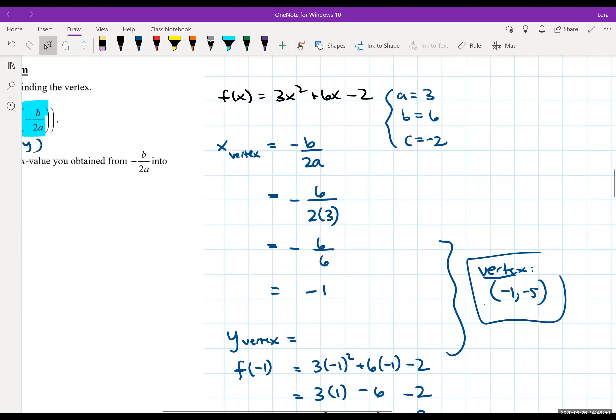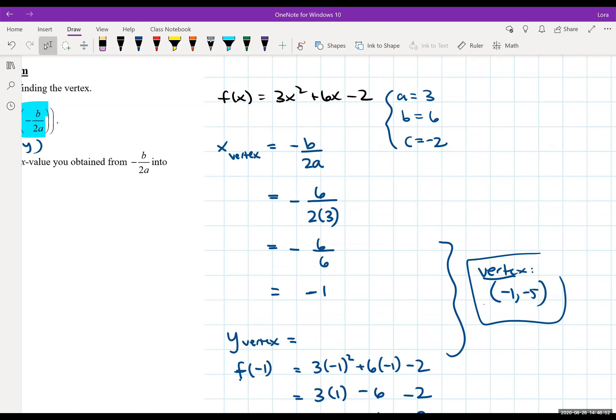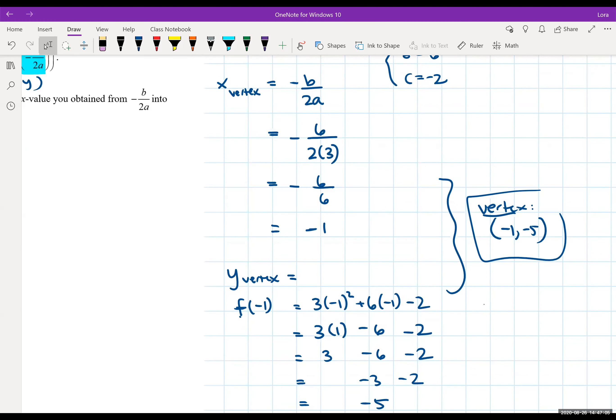So sometimes if you get tied up on completing the square, you could use this as a check to see if your completing the square process worked. Or if you forget the vertex formula, you can go with completing the square and go through it this way. So I hope this helps. See you next time.